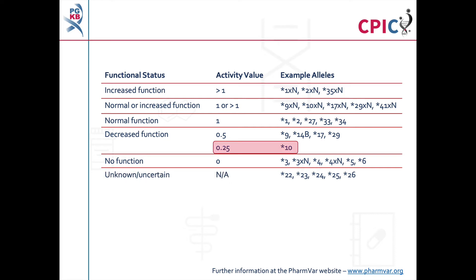As a result of the CPIC CYP2D6 genotype to phenotype standardisation project, the CYP2D6 star 10 allele was assigned an activity value of 0.25. This reflects its significantly reduced function compared to other decreased function alleles. More information on the project can be found on the CPIC website. As this guideline was published before completion of the standardisation project, the star 10 allele is still given an activity value of 0.5 in the original manuscript.